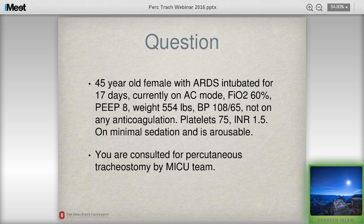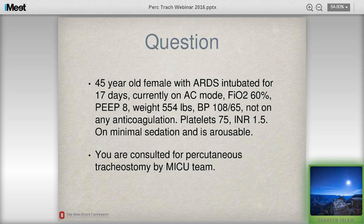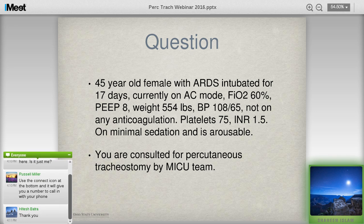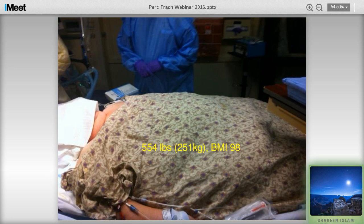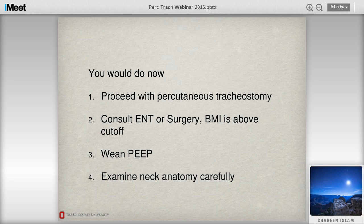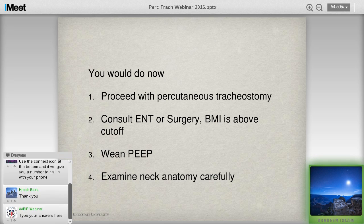Let's go through a case. A 45-year-old female has ARDS, intubated for 17 days on volume control, 60% FiO2, PEEP 8, weighing about 554 pounds, blood pressure stable at 108/65, not on anticoagulation, platelets 75, INR 1.5, and can be aroused on minimal sedation. We were consulted for tracheostomy. To calculate the BMI, it comes to 98. The question is: what would you do? Option one: proceed with percutaneous tracheostomy; option two: consult ENT or surgery; option three: BMI is above our cutoff; option four: examine the neck anatomy carefully.